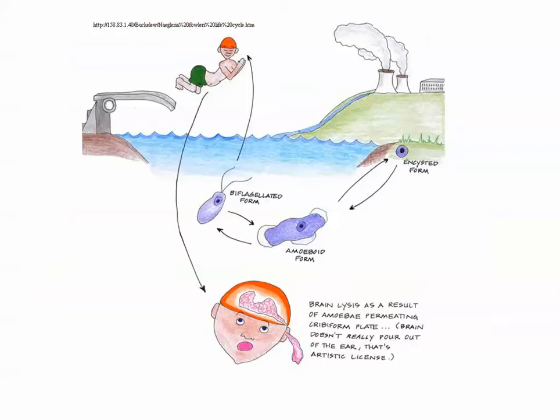Naegleria fowleri is mainly found in water as a free-living parasite. Humans mainly acquire this parasite through inhalation of water through the nose — primarily through swimming or diving, where contaminated water enters the nose. The parasite will then immediately cross the cribriform plate, passing through the mucous membrane lining the nasal cavity, and into the brain.